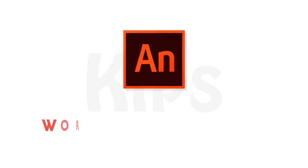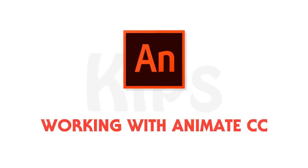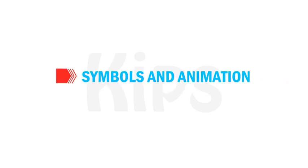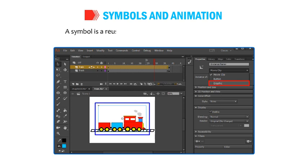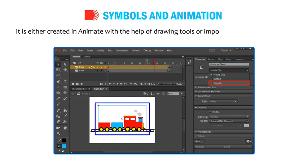Today, we will learn about working with Animate CC. First, let us understand about symbols and animation. A symbol is a reusable object for static images or animation. It is either created in Animate with the help of drawing tools or imported from other sources.